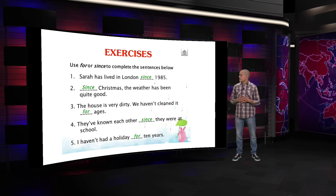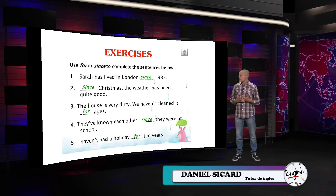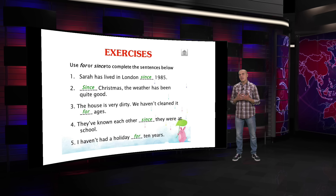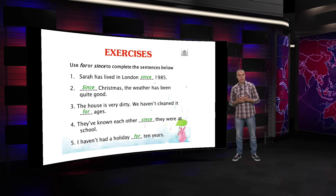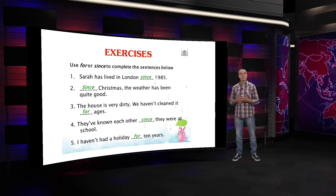Let's check this out. Number one: Sara has lived in London since 1985. That's present perfect. If you haven't checked that topic, we invite you to check our videos. Sara has lived in London since 1985 — it's clear, the point in time is the year since 1985.